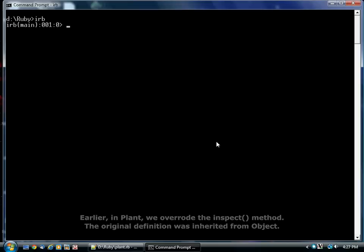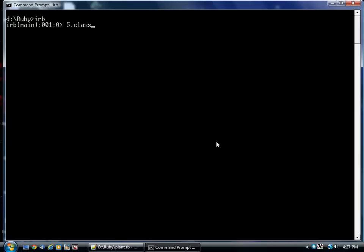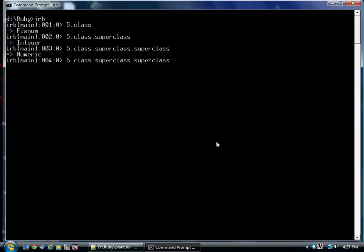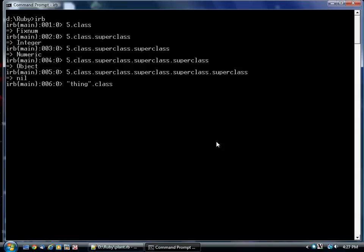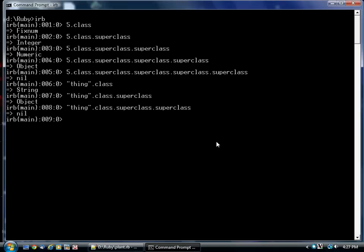Check this out. Every object in Ruby has a class method, which returns the class. If you then call superclass on it, you get its superclass, and you get its superclass. As we saw, the hierarchy leads up to Object. Object has no superclass. String has a superclass of Object, which again has a superclass of nil. Everything descends from Object.